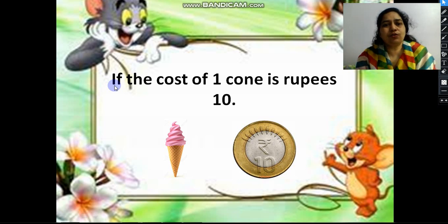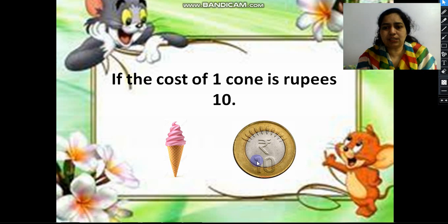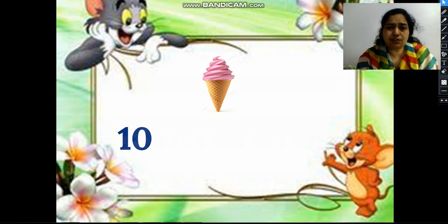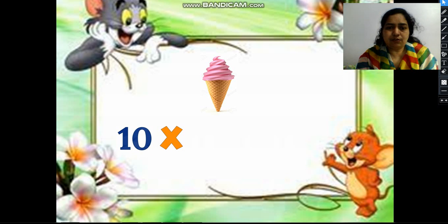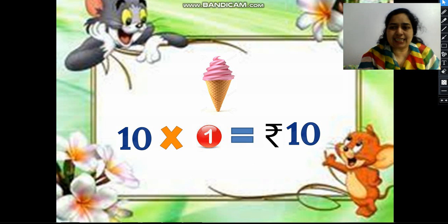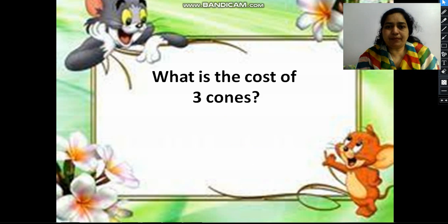Now we will go on to the next example. If the cost of 1 cone is 10 rupees, we are going to multiply it with the number of cones, that is 1, which is equal to 10 ones. So the cost is 10 rupees.